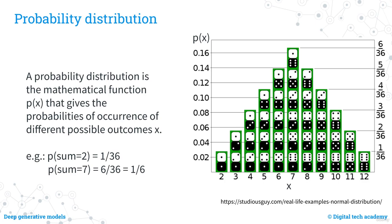As an example, consider rolling two six-sided dice and adding up the numbers. The probability distribution for the possible sums shows, for each sum, the combinations of dice that result in that sum. There is only one combination that results in a sum of two, whereas there are six combinations that result in a sum of seven, making seven more likely. The probability of rolling a two is 1/36, while the probability of rolling a seven is 6/36, or 1/6.